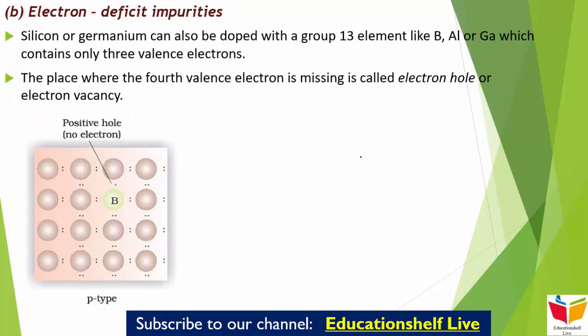Next part है electron deficit impurities। Silicon और germanium को हम group 13 elements जैसे boron, aluminium, या gallium से भी doped करा सकते हैं, जिनमें सिर्फ 3 valence electrons present होते हैं। ये भी lattice site occupy कर लेंगे लेकिन उनके पास 3 ही electron हैं, तो एक electron की deficiency हो जाती है। The place where the 4th valence electron is missing is called an electron hole or electron vacancy।